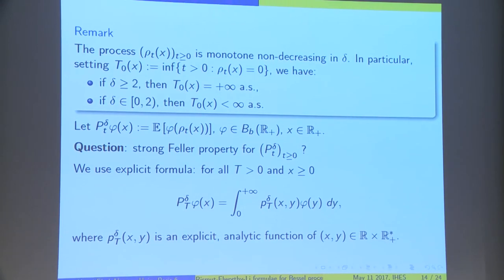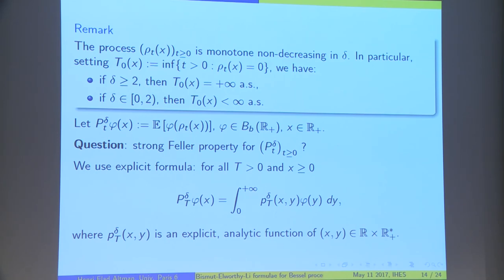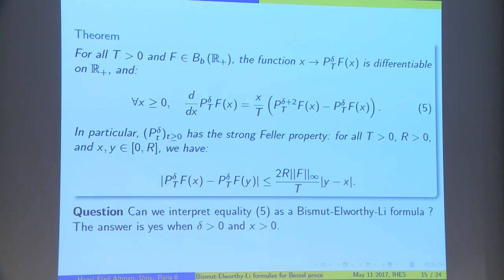The question is, do we have a strong Feller property for the Bessel semigroup? In order to answer this question, we have an explicit formula of the semigroup with a density with respect to Lebesgue measure on ℝ+. We can compute the derivative of the semigroup with respect to x. For all t positive, the semigroup of the δ Bessel is differentiable on ℝ+, and the derivative involves x over t times the difference of the semigroup of the δ plus 2 Bessel minus the δ Bessel.